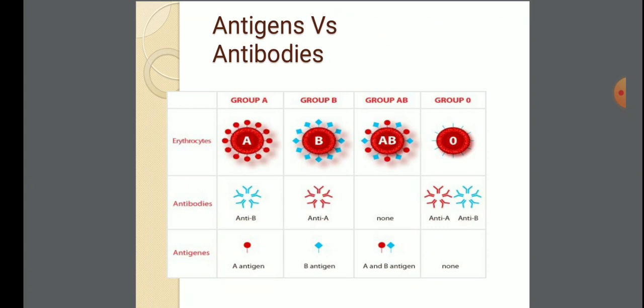This is the antigens versus antibodies chart. You see four columns — Group A, Group B, Group AB, and Group O — with rows for erythrocytes, antibodies, and antigens. Group A includes anti-B antibodies and antigen A present. Group B includes anti-A antibodies and antigen B present. Group O has neither antigen A nor antigen B, but antibodies anti-A and anti-B are both present.